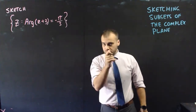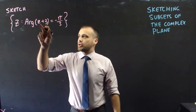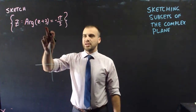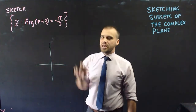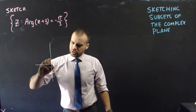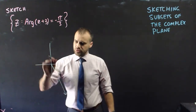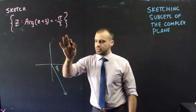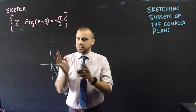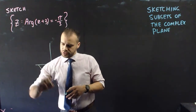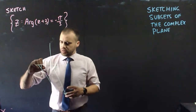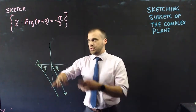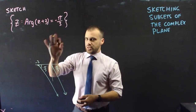Now a similar one: arg(z + 3) = −π/3. Think geometrically. If it were just arg(z) = −π/3, we'd draw a ray at angle −π/3 from the origin. But it's arg(z + 3), so we apply a horizontal shift of −3. The ray still makes angle −π/3 but is now anchored at the point −3. Complex numbers on that shifted ray satisfy the condition.